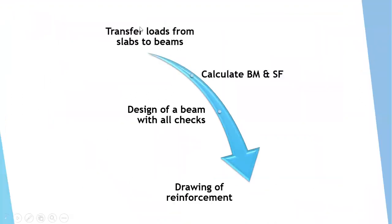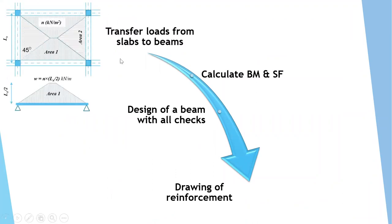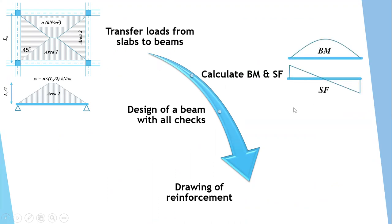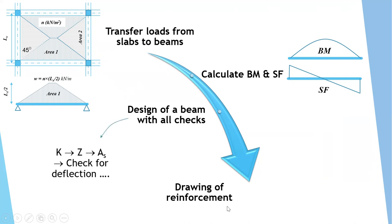The first thing we start with is transferring loads from slabs to beams. This will include trapezoidal loads, triangle loads, and uniform loads from one-way slabs. After doing that, we will calculate the bending moment and shear force diagrams. Then we'll design a beam with all checks, and finally go to drawing of reinforcement.